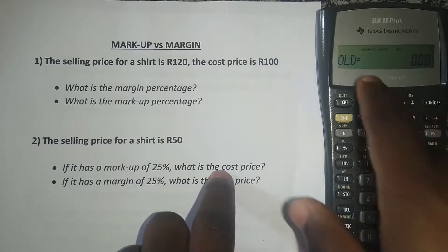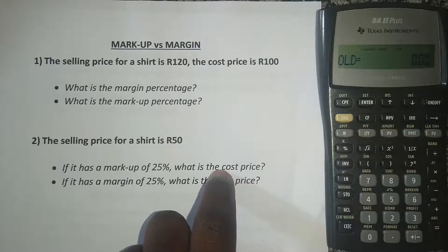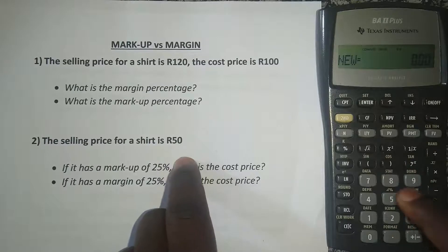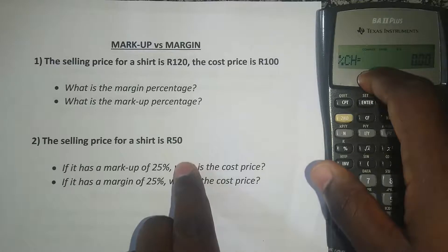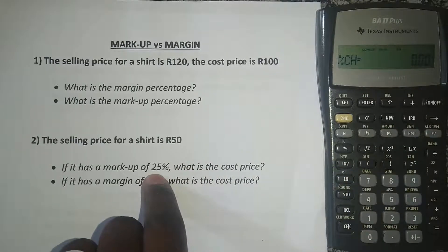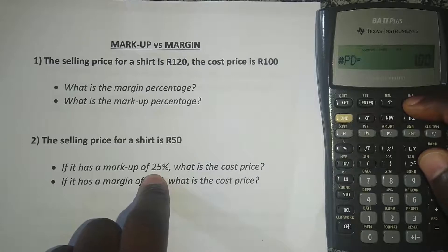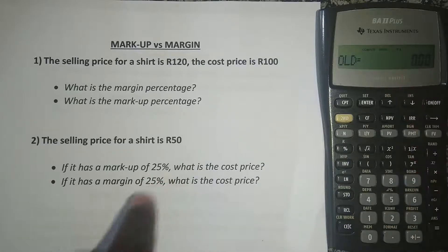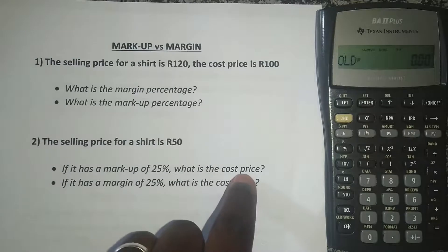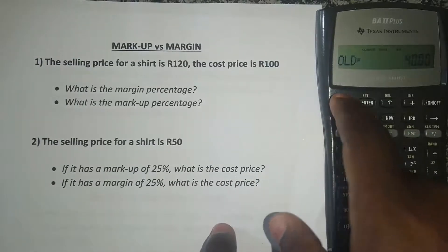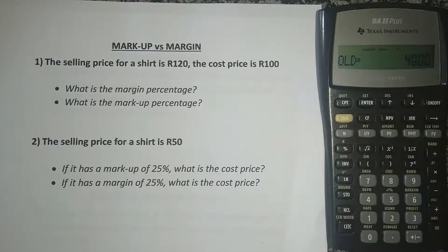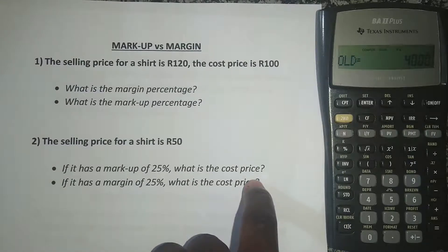We are told the selling price is 50 Rand and we are asked what the cost price is. Remember, old is cost price — which we don't have, we're trying to figure it out. So we press the downward arrow and new is the selling price. So it's 50 Rand — press enter, then press the downward arrow. The percentage change is 25% — that is the markup. So I put 25 and press enter. Then press the downward arrow and navigate back to old, which is the cost price — that's what we want to compute. I press CPT and it has given me: the cost price is 40 Rand.